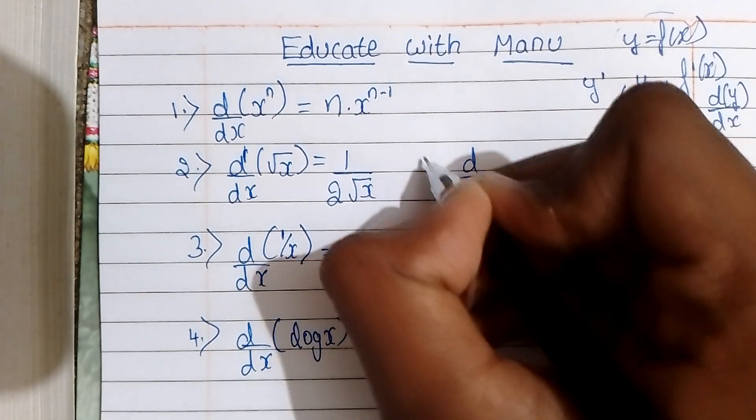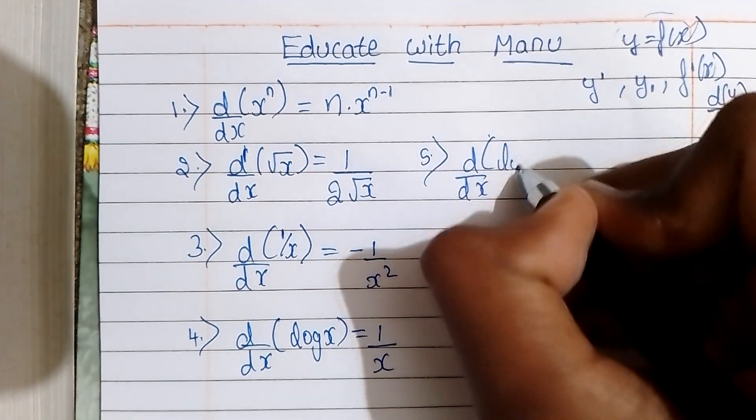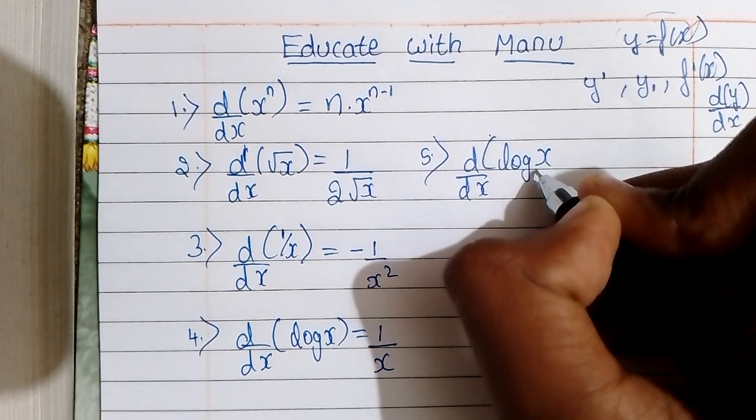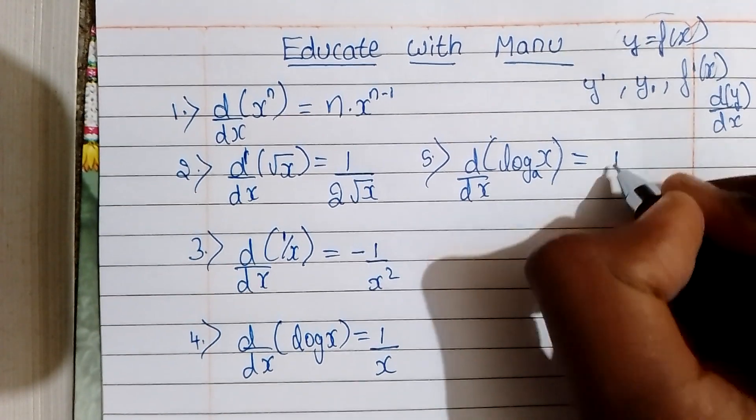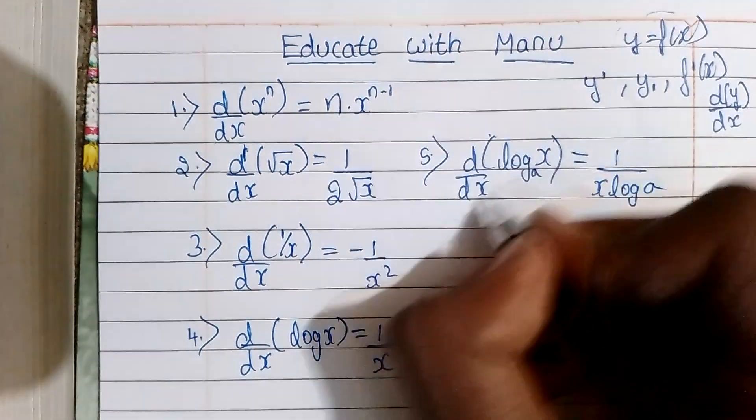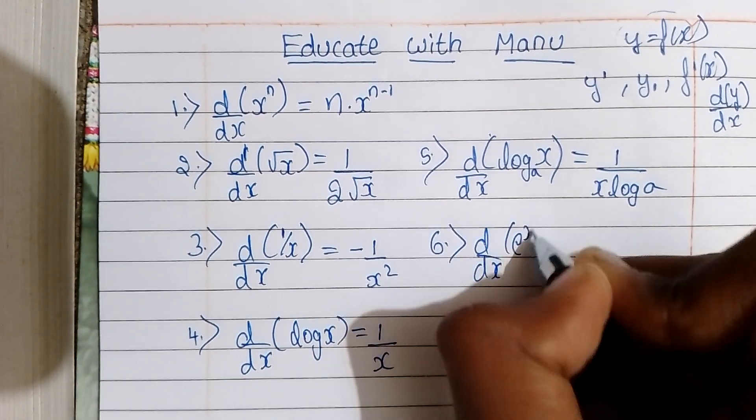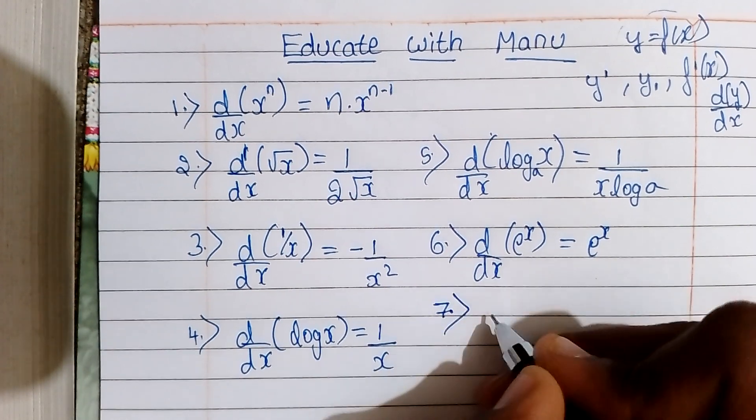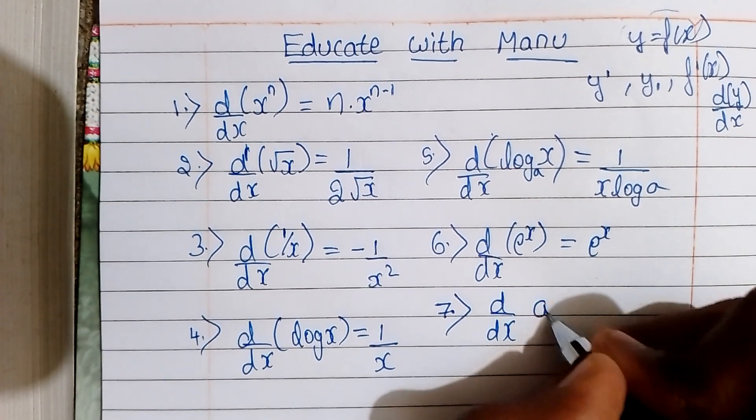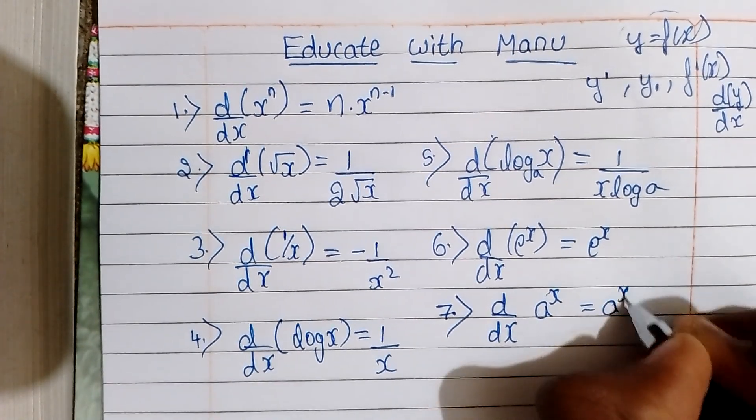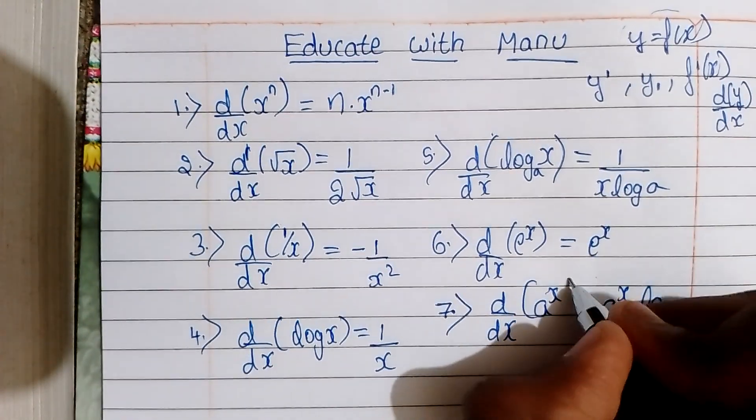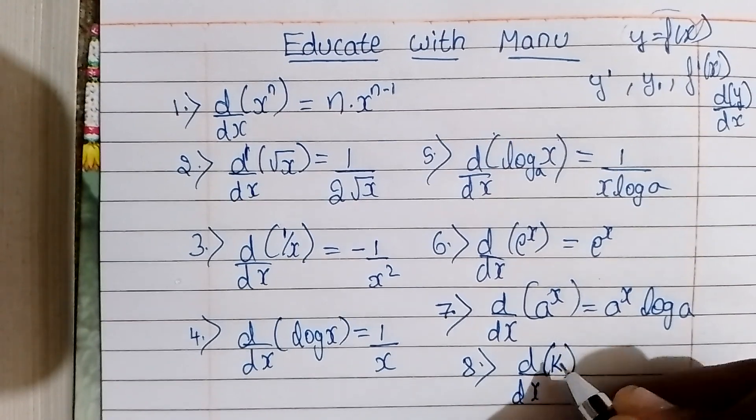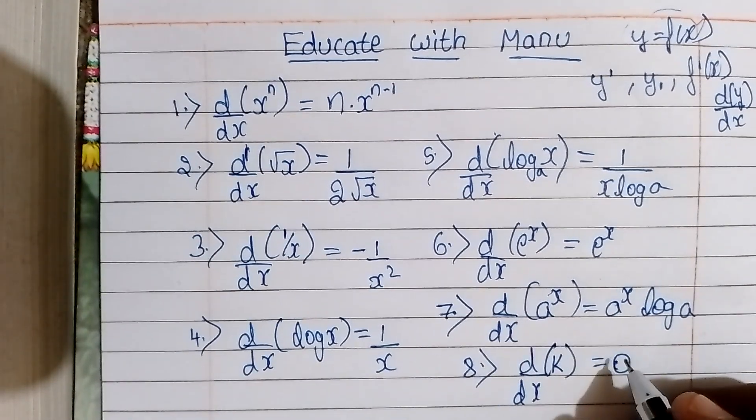d/dx of log x is 1/x. Next, d/dx of e^x is e^x. d/dx of a^x is a^x log a. d/dx of constant k, any number, the derivative is 0. This is the main formula.